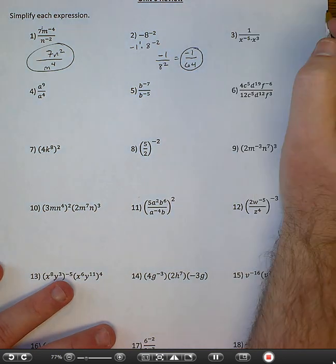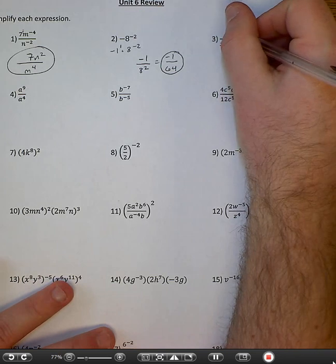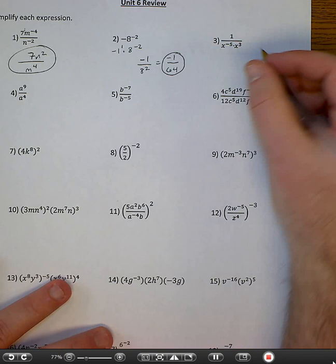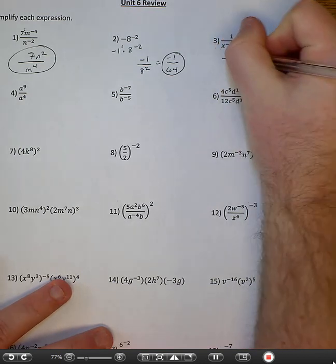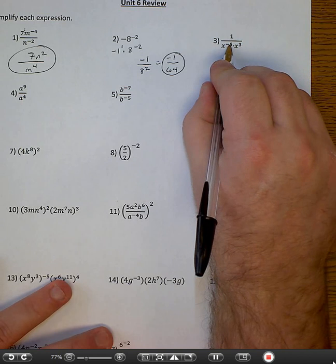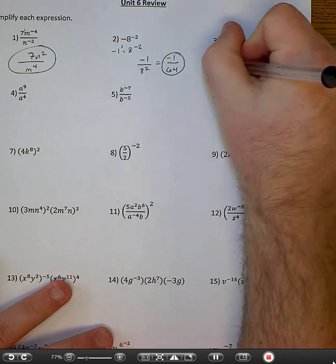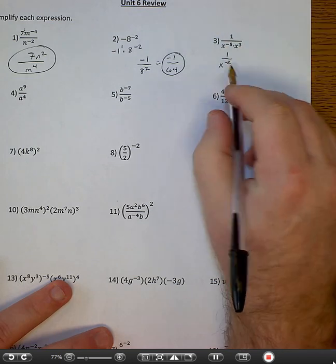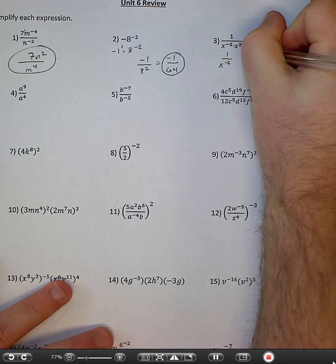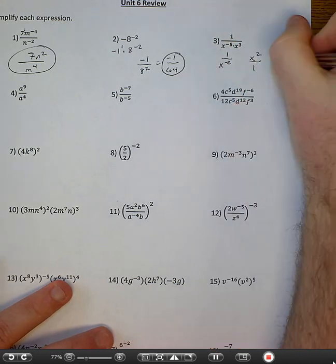Number three. A couple different ways you could do this — you could move the five, x to the fifth, to the top first if you want. But I'm going to go ahead and put these together where they're at. So I have one over x to the negative fifth times x to the third. I'm going to add these exponents: negative five plus three is negative two. Now it's still a negative exponent, so I'm going to move it to the top. It becomes x squared. You can just say x squared.